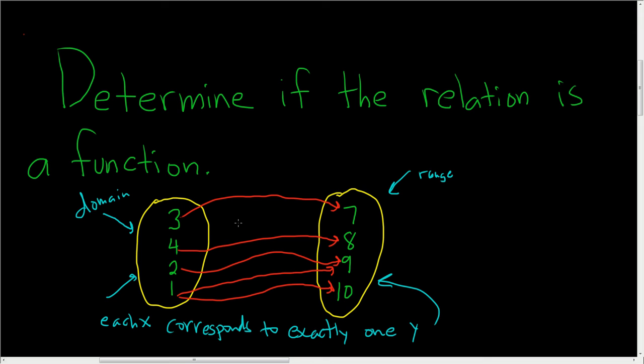So each of these has to get sent to one and only one of the elements over here. So let's see, 3 goes to 7, so that's okay. 4 goes to 8 and it doesn't go anywhere else. 2 goes to 9 and it doesn't go anywhere else.